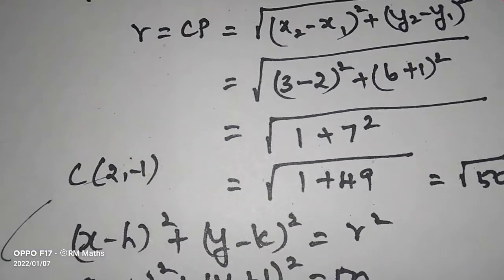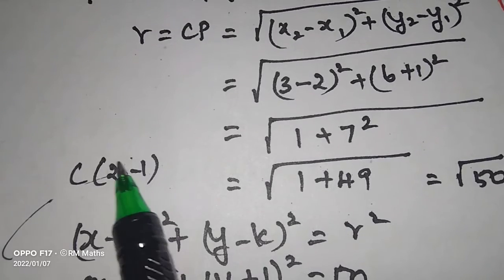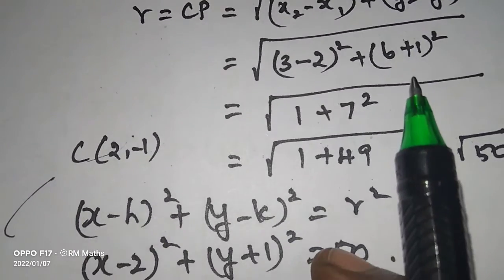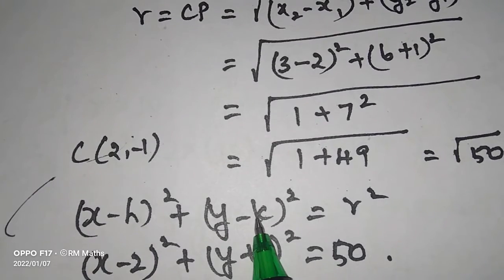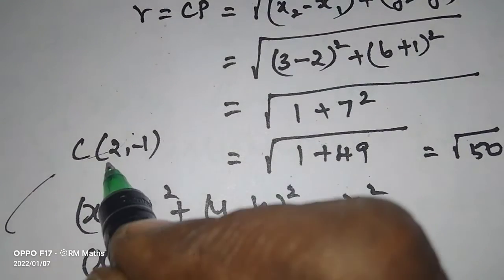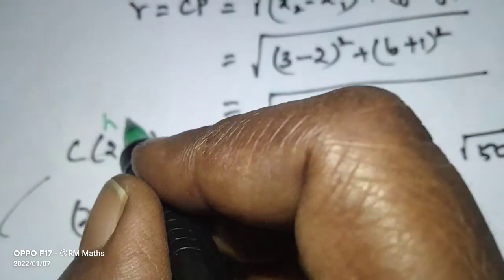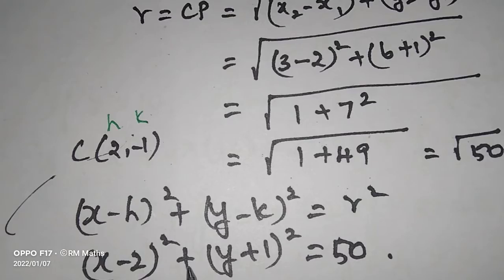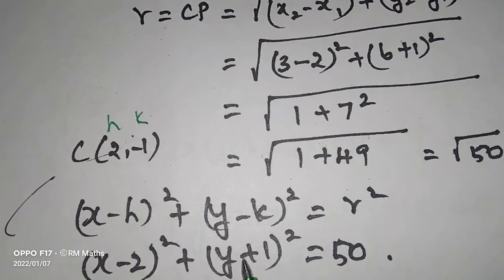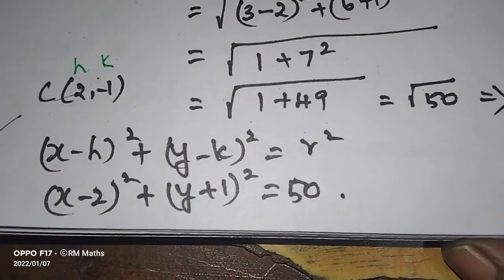The center is (2, minus 1). Then the equation is (x minus 2) whole square plus (y plus 1) whole square equals 50.